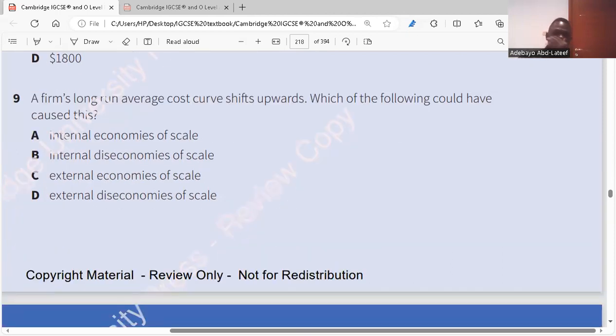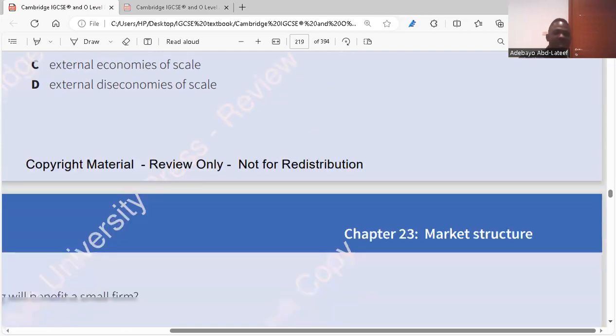Question nine. A firm's long-run average cost curve shifts upward. Which of the following would have caused it? Long-run average cost shifts upward. It increases. Internal diseconomies of scale.